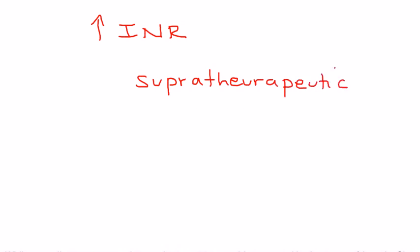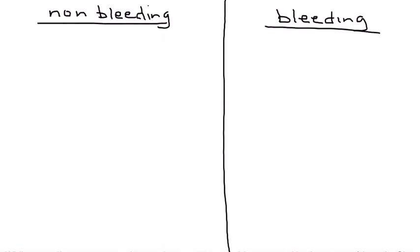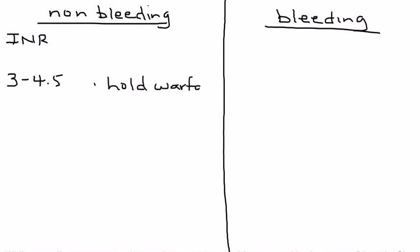We'll discuss how to manage a supra-therapeutic INR — how to bring it back to the goal of 2 to 3 in a patient on warfarin. We have two categories: patients with an elevated INR who are not bleeding, and patients who are bleeding. For a non-bleeding patient whose INR is between 3 and 4.5, this is the most common finding. All you need to do is hold the warfarin — discontinue it for a few days, typically about five days.